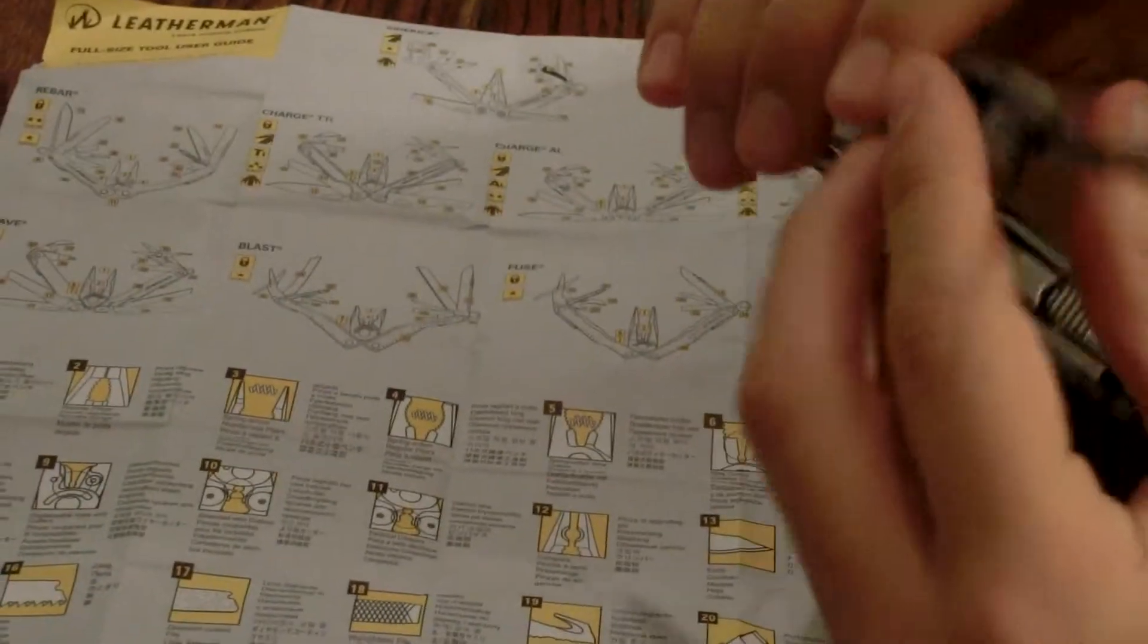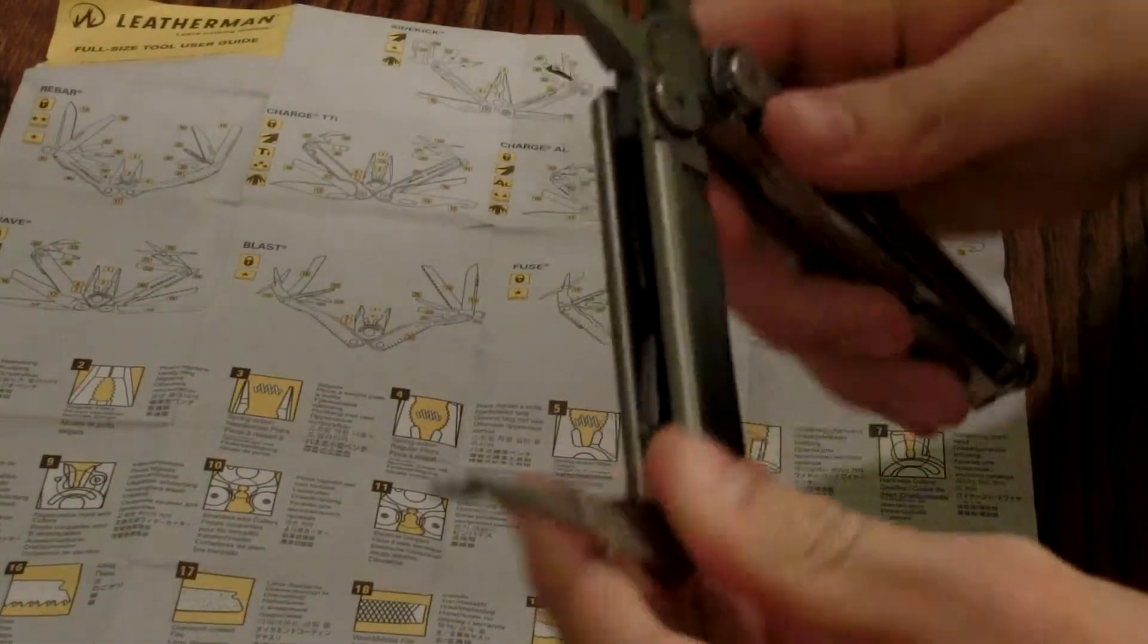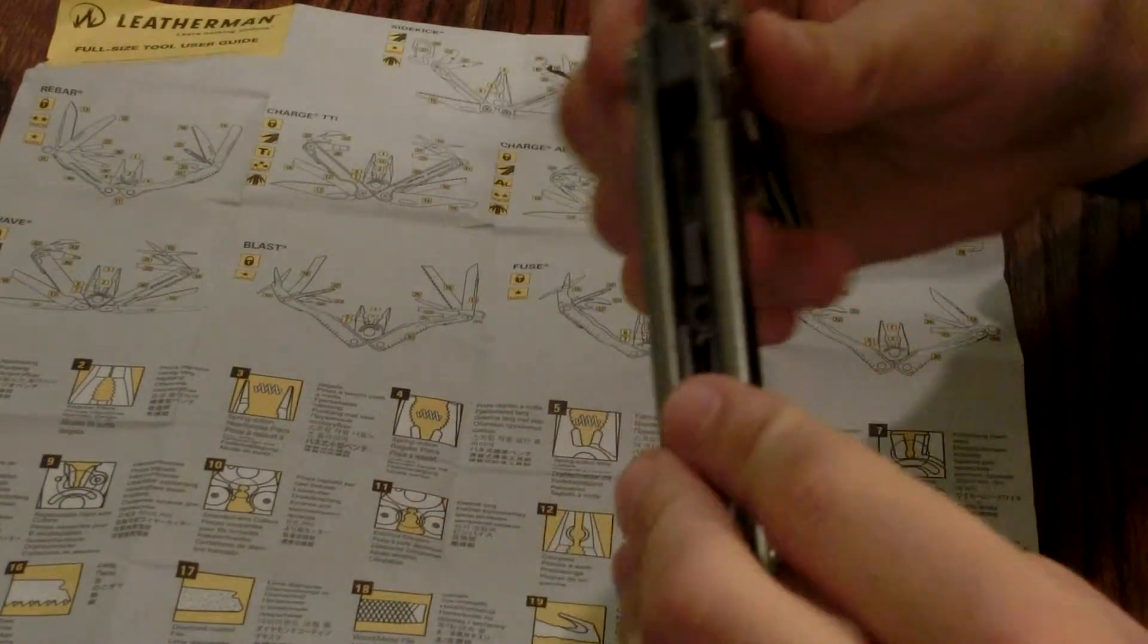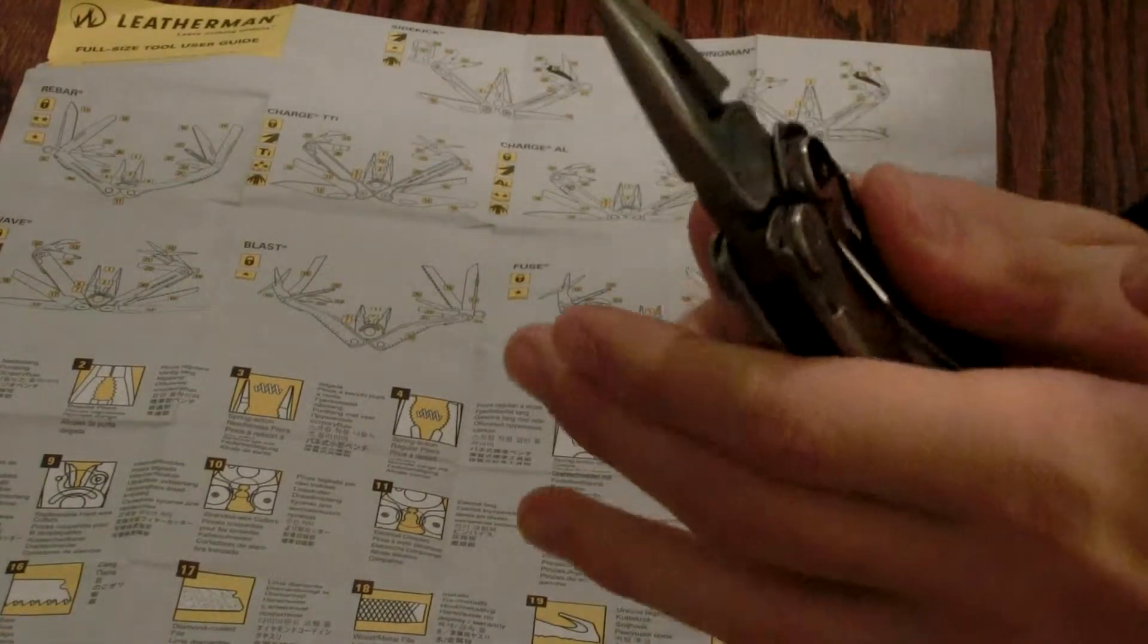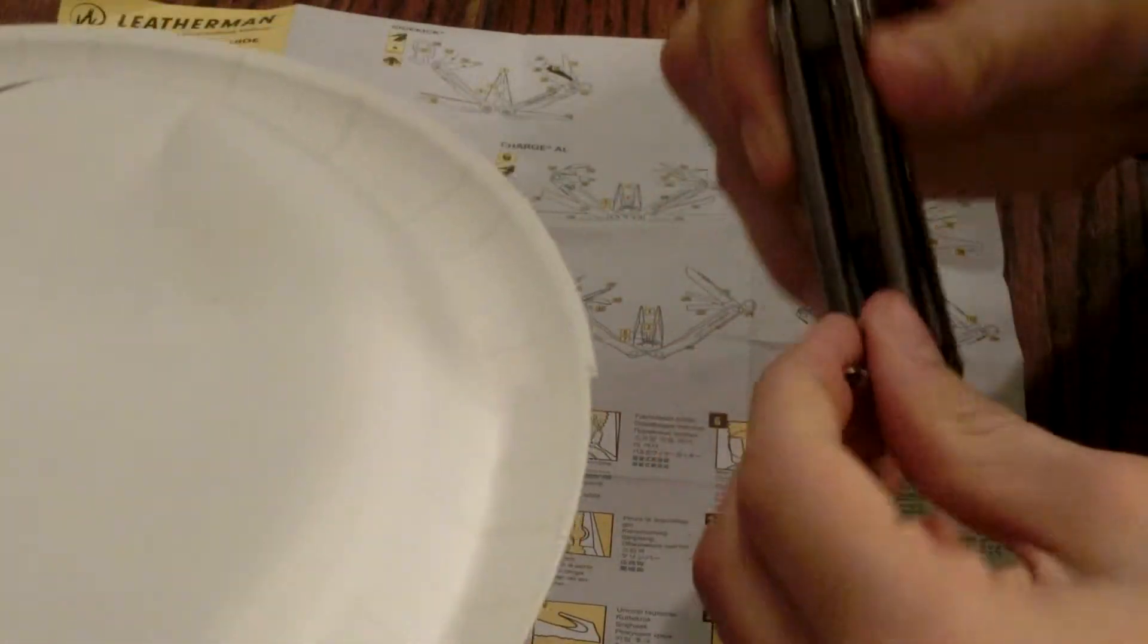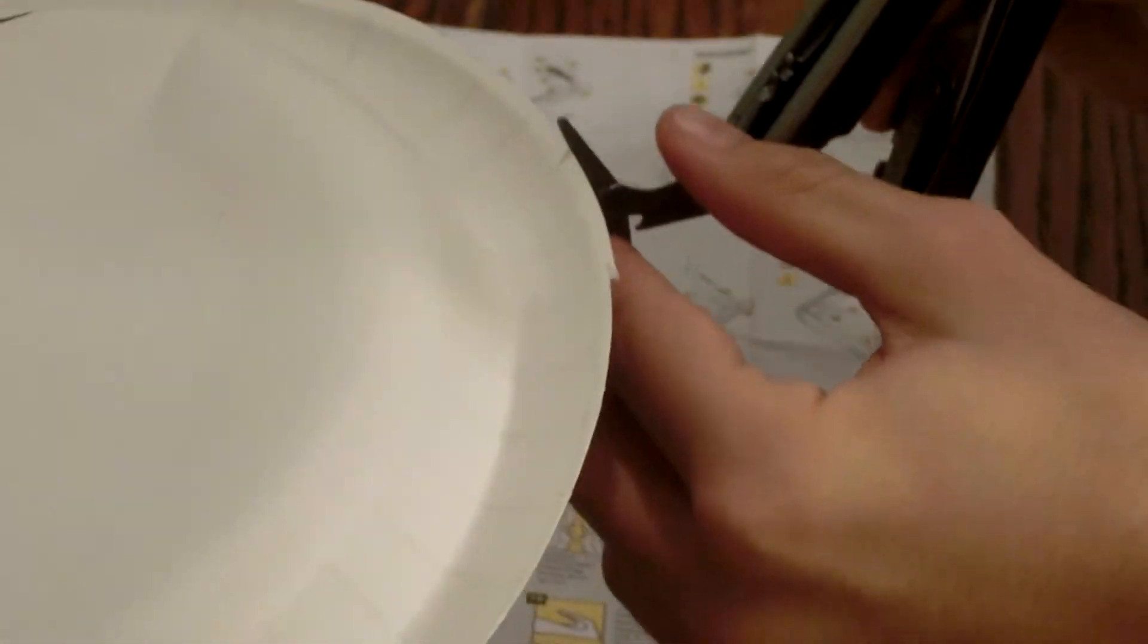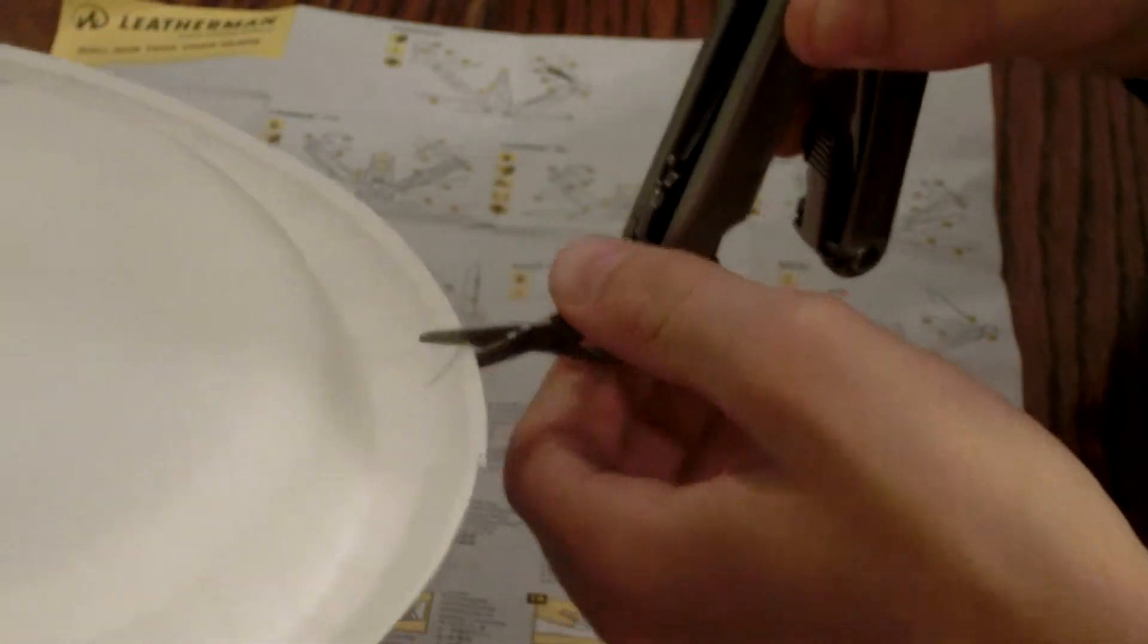Notice how everything whenever you pull it out locks. Yes, everything on here locks into place. And so that is everything from the inside of this. Let me test the scissors real quick on this paper plate.